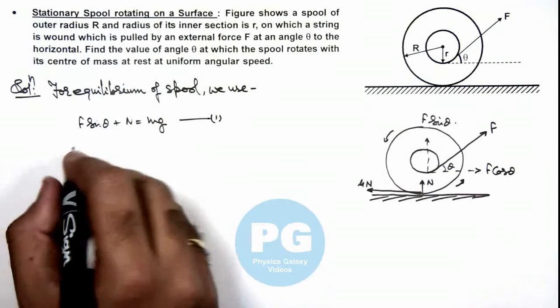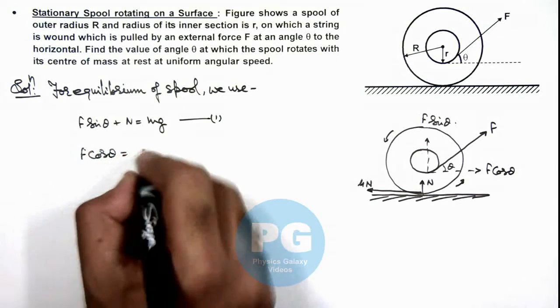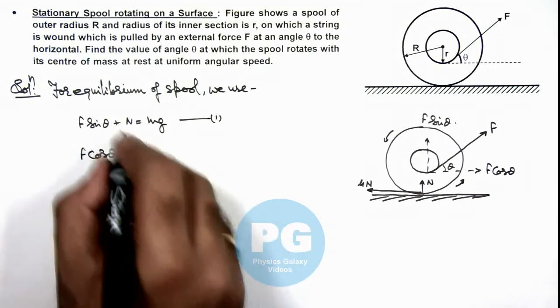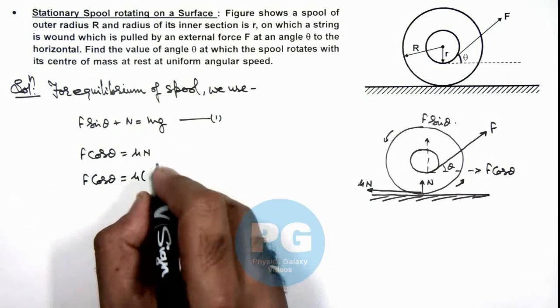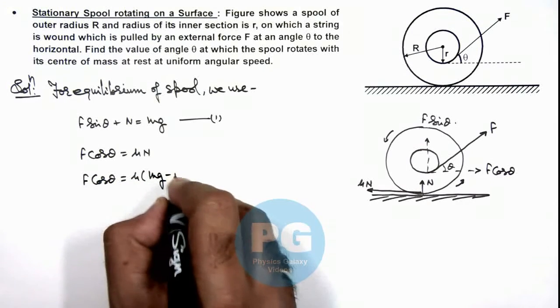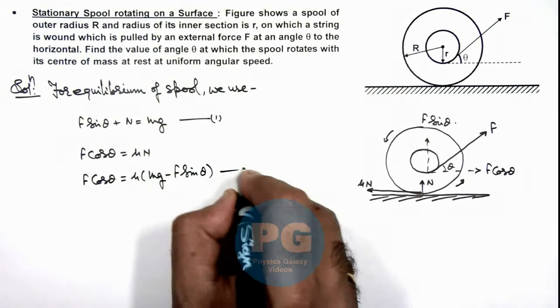And in horizontal direction we can write F cos theta is equal to mu N. The value of N we are having, we substitute here as N is mg minus F sin theta. That is say our equation 2.